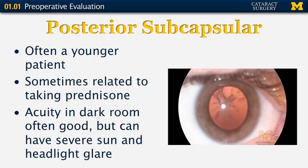A posterior subcapsular cataract is often seen in a younger patient. It can be related to taking prednisone. It forms in the posterior part of the lens at the posterior capsule. These patients can often experience very good vision in a darkened room such as the exam room, but they have severe sun and headlight glare that can almost be debilitating.